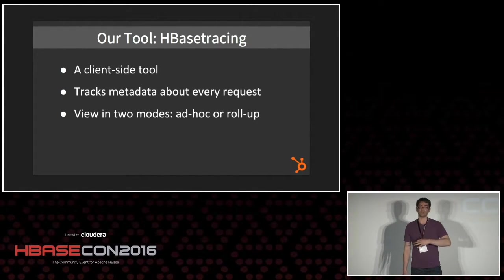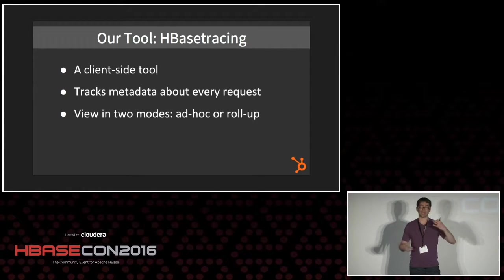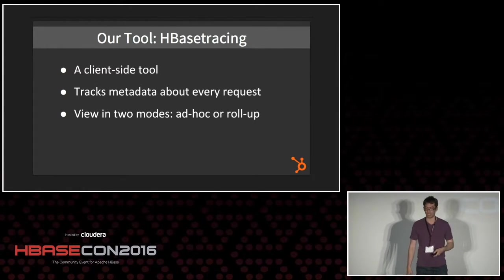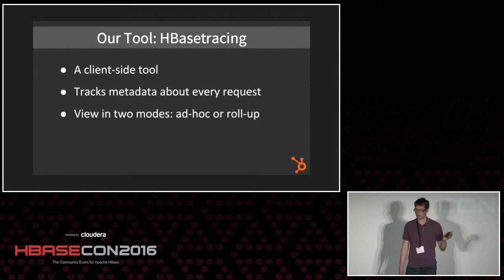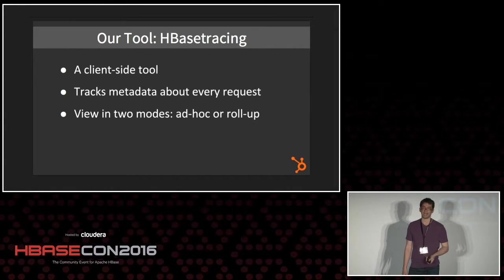We have two ways of viewing that data. One is ad hoc querying — it goes into a Redshift database and we do SQL queries to figure out what might be going wrong. Or we have a roll-up view, which is a high-level view of what's going on in these tables. We have around 300,000 to 400,000 requests per second going into that, last time I checked a couple months ago.